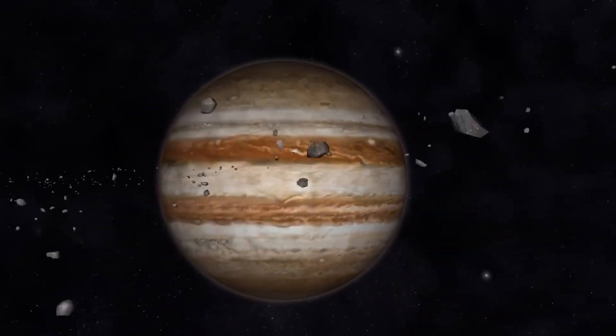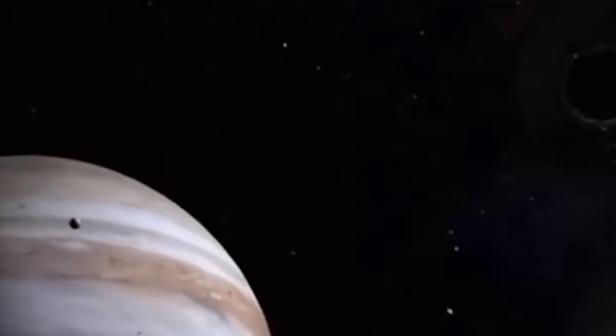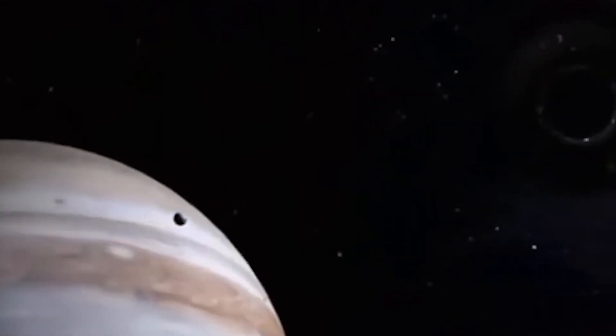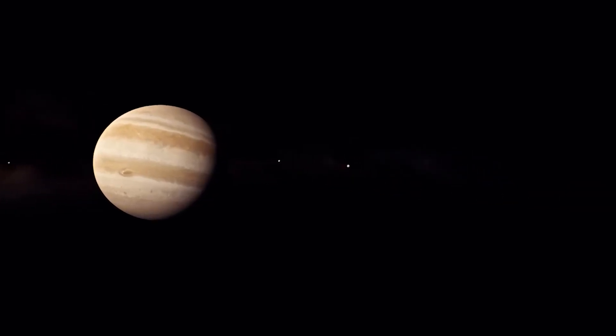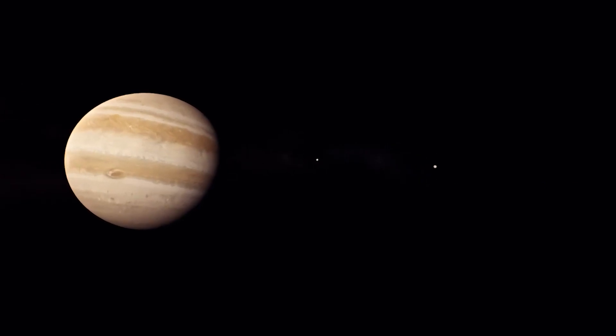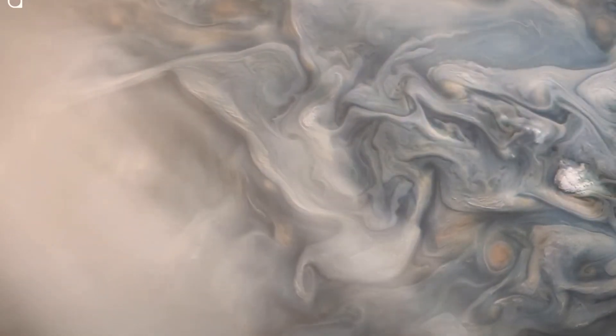Amalthea is the bright dot on the far left, and Adrastea is the faint dot at the edge of the rings, located between Amalthea and Jupiter. The faint dots of light behind the three celestial bodies are thought to be galaxies.